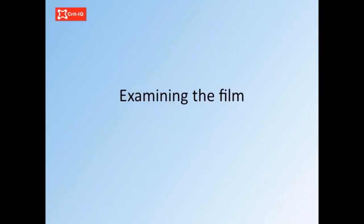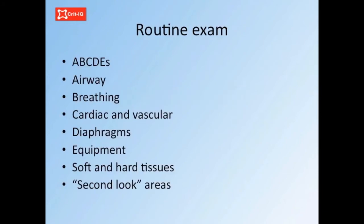A simple process is to review the A, B, C, D, E's: Airways, breathing bits, cardiac and cardiovascular structures, diaphragms, equipment, and soft and hard tissues. Finally, it is important to have a second look at some common places where pathology hides.